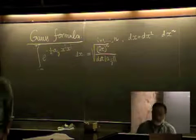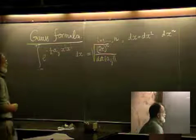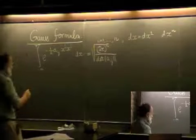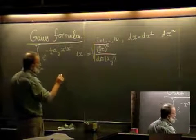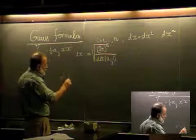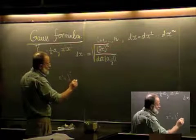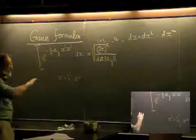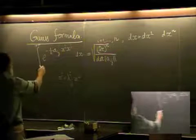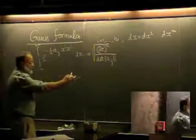The derivation is quite simple. First, we make a change of variables: instead of x^i, we take x^i = λ^i_j x'^j. As agreed previously, repeated upper and lower indices imply summation — here we have summation over j.